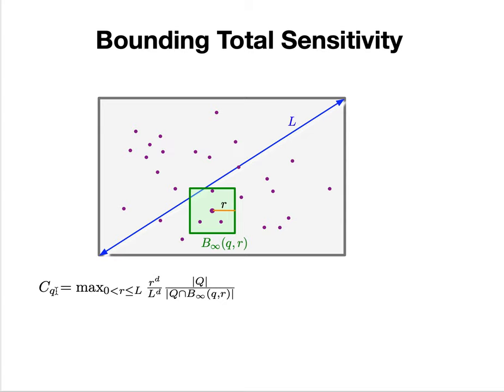I'll give you a taste of how this main technical result works. The idea is we have to bound the total sensitivity of the points at Q. Remember, if the points at Q are uniform, we know the result.